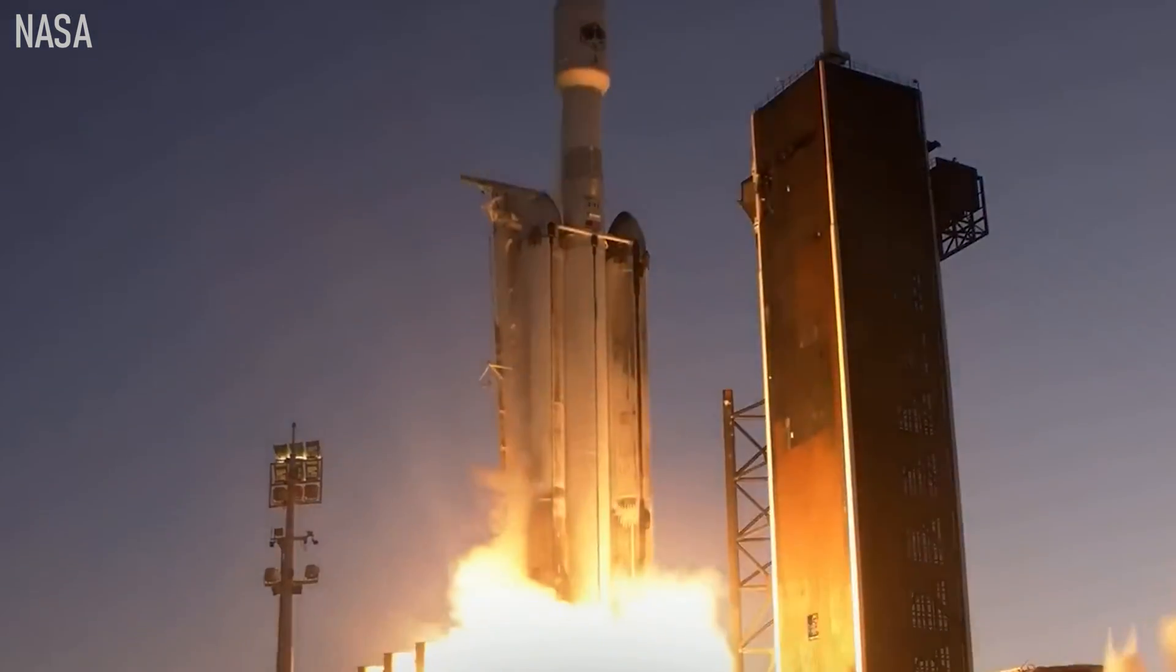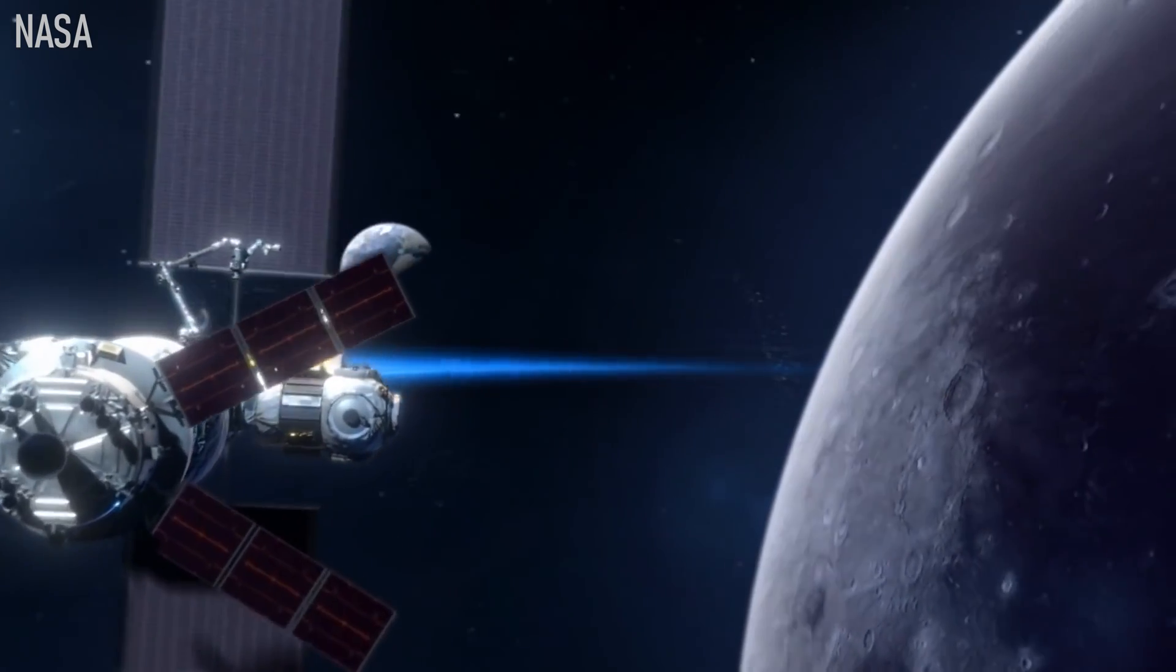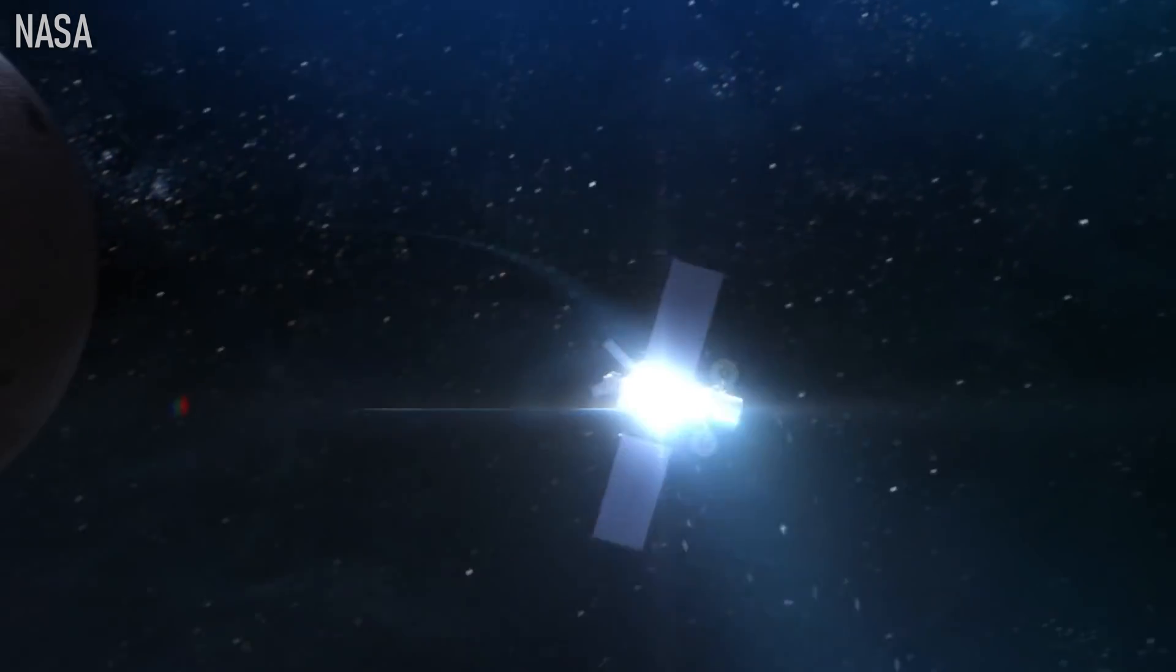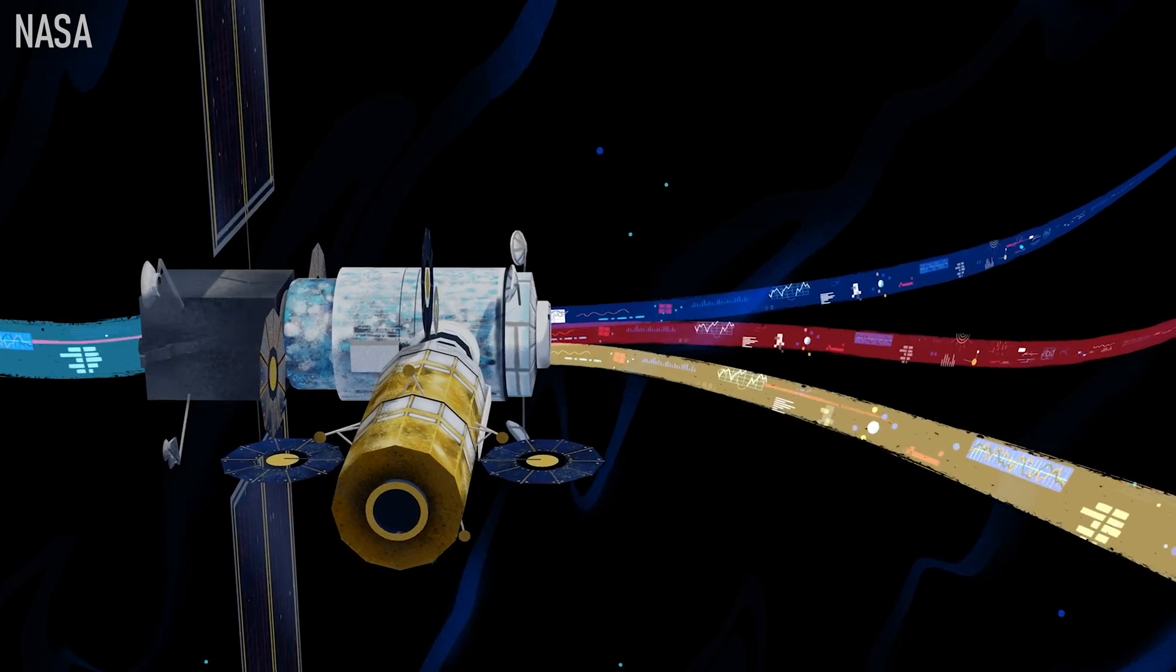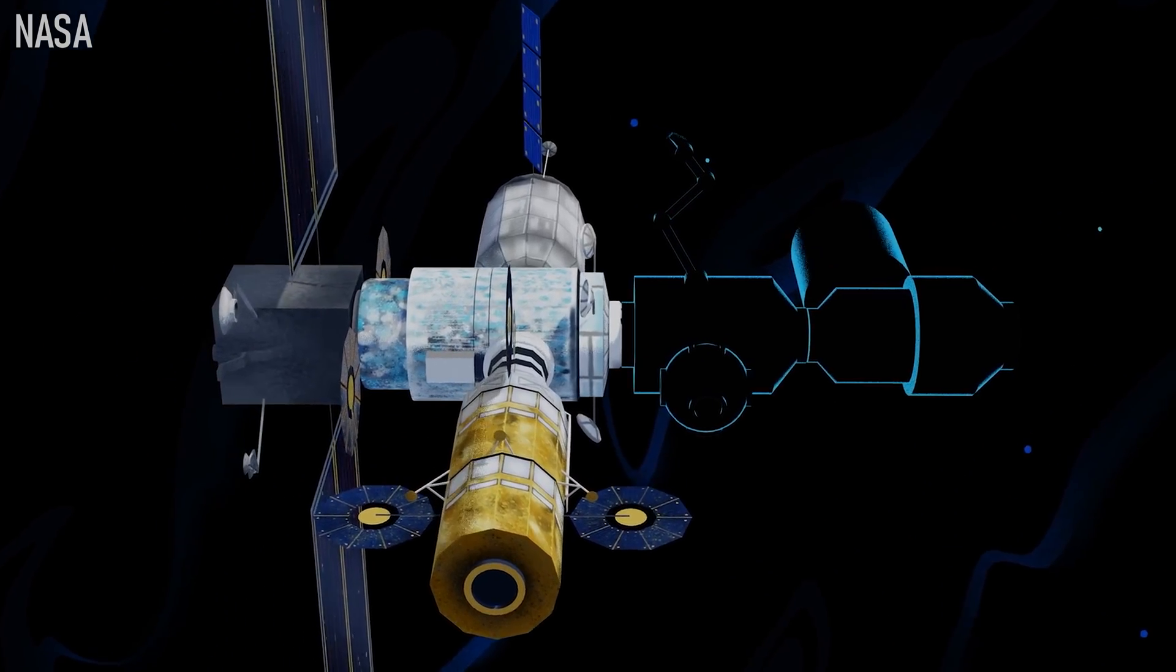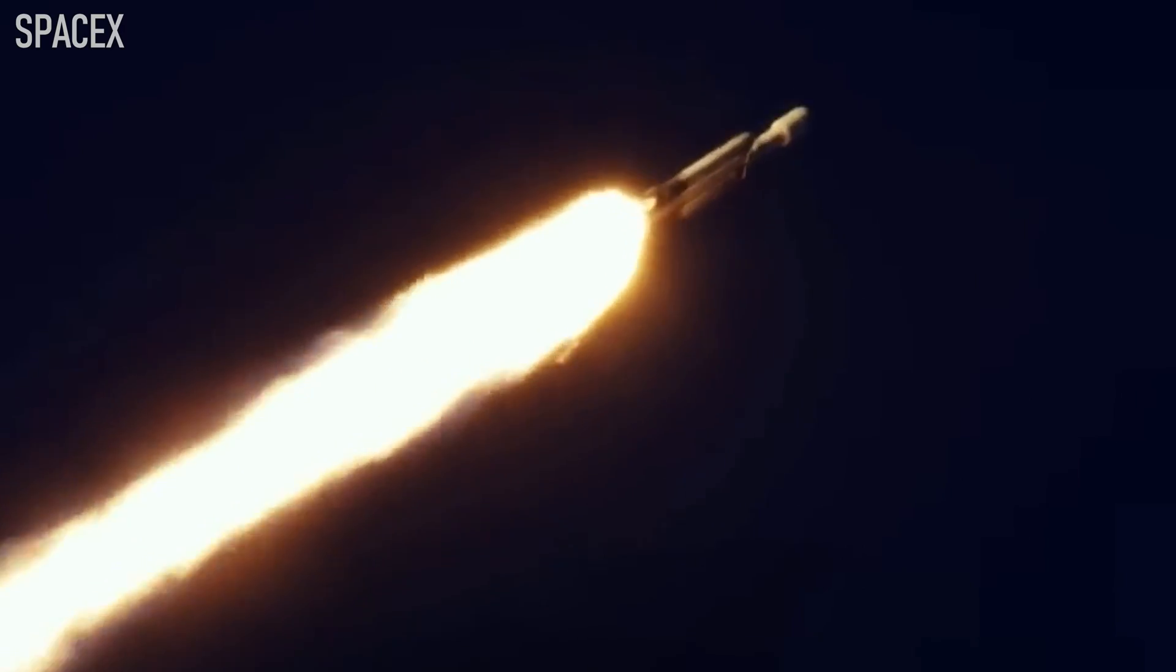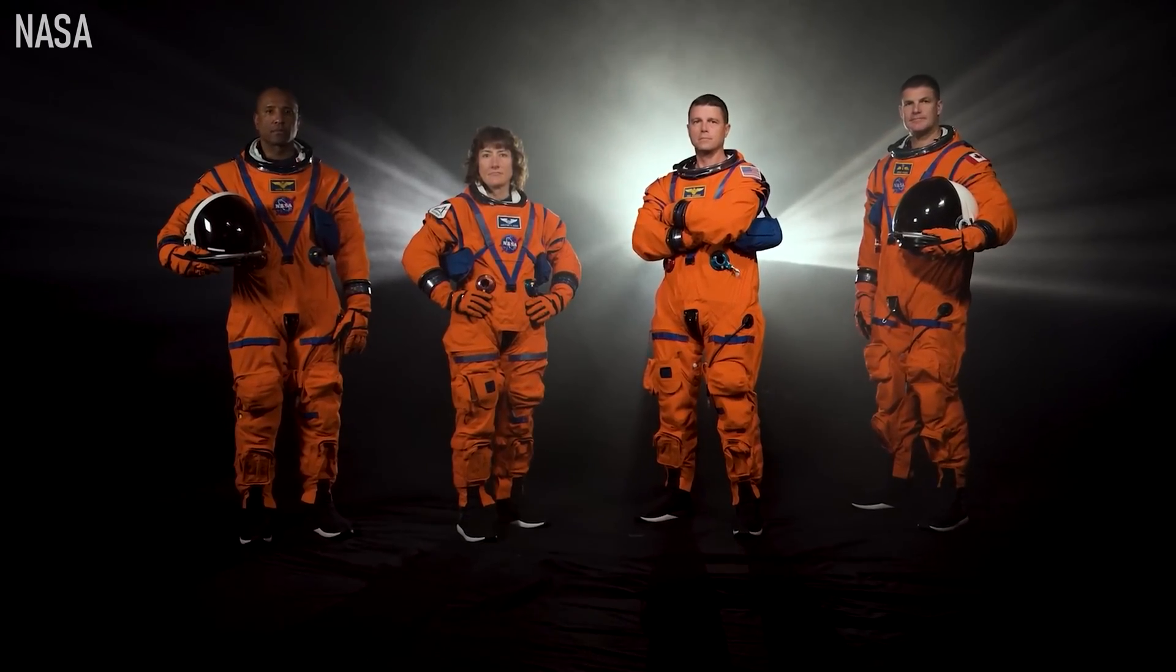But before all that can happen, SpaceX will also be launching modules of the Artemis program's Lunar Gateway, a space station that will orbit the moon and act as a sort of receiving hub for lunar missions. The first two modules of the Gateway include the power and propulsion module, as well as the habitation module, and are expected to launch aboard SpaceX's Falcon Heavy in November of 2024, around the same time that Artemis 2 will be launching their crewed lunar flyby.